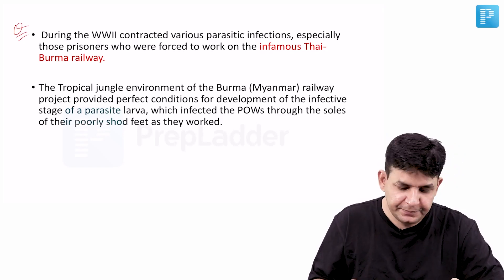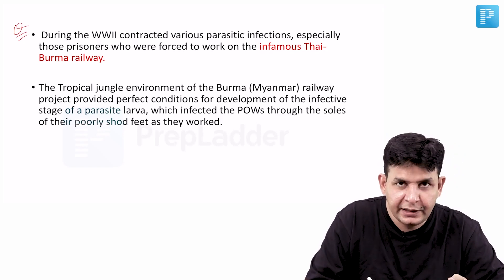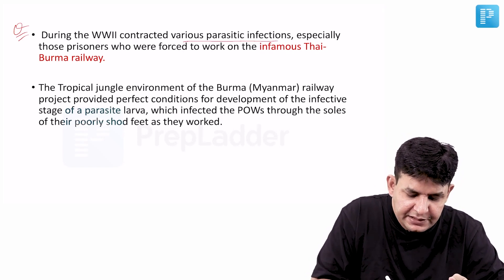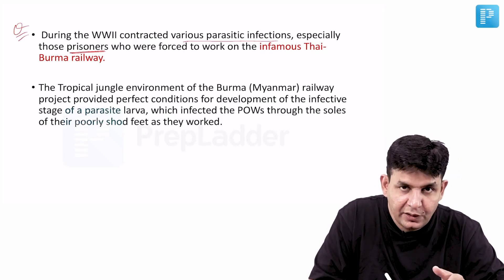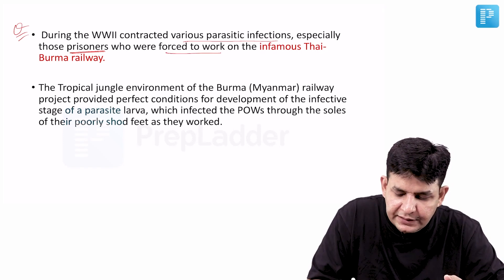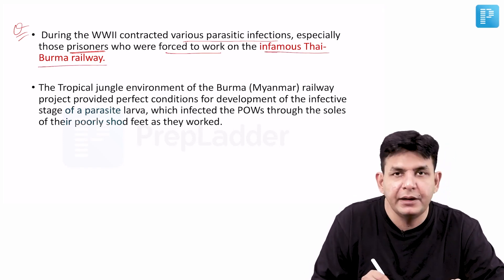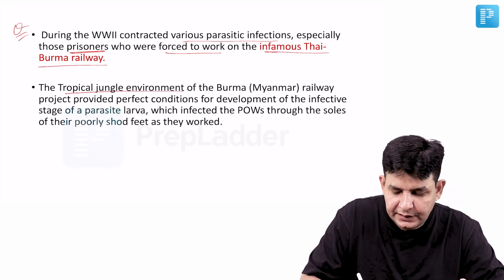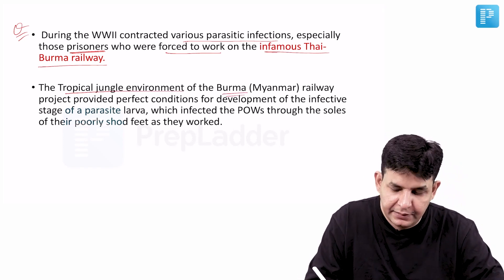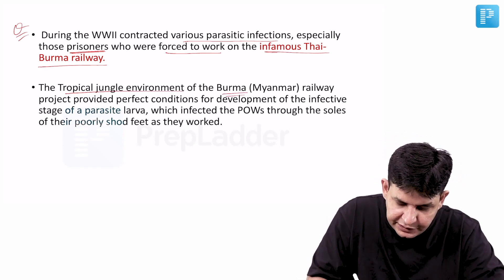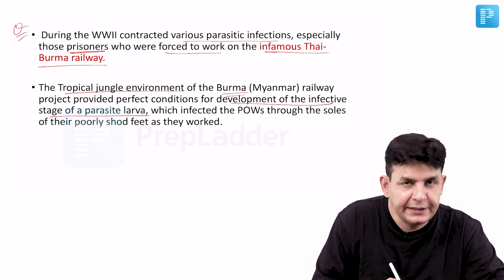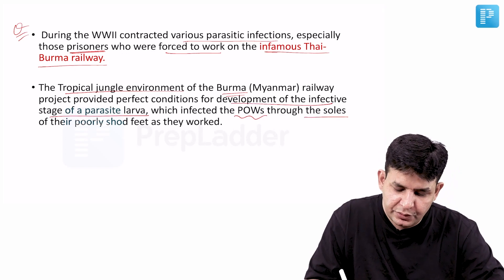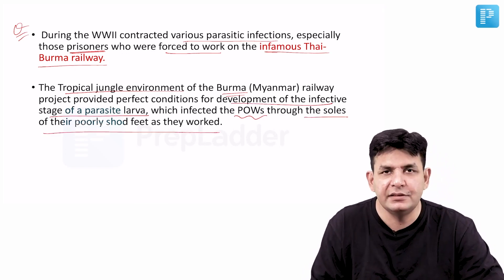During World War II, 1939 to 1945, prisoners contracted various parasitic infections. The prisoners being talked about are those who were forced to work in the infamous Thai-Burma railway project in the tropical jungle of Burma. Myanmar provided the perfect conditions for development of the infective stage of a parasite, which infected these prisoners of war through the soles of their poorly shod feet as they worked.